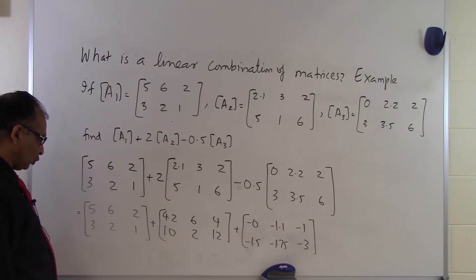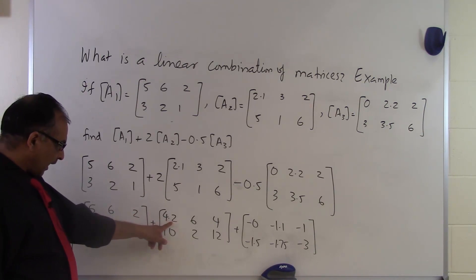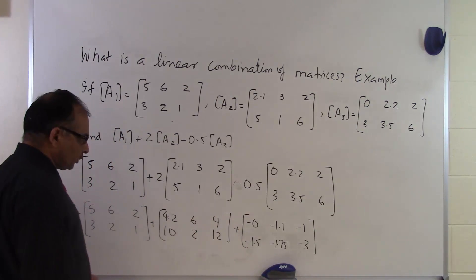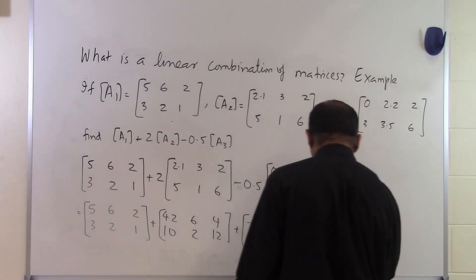And all you have to do now is to do element by element addition. So for example, if I want to now find what is the resulting first row, first column, I will take the first row, first column here, 5, then add it to 4.2, and then add it to minus 0, I'll get 9.2. So that's what you will do for each element.